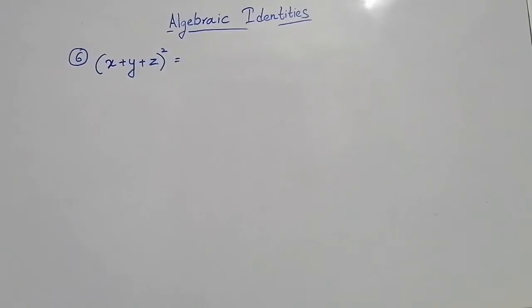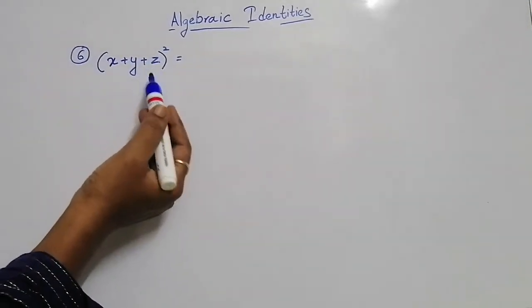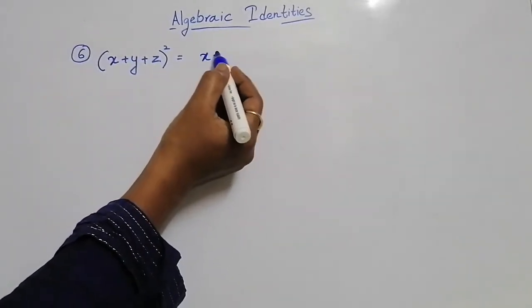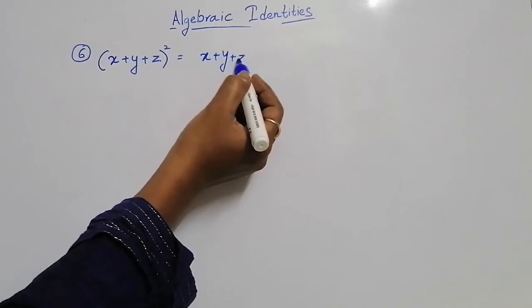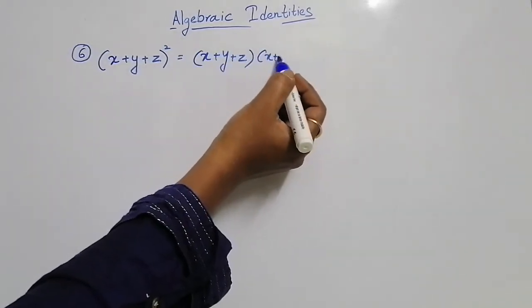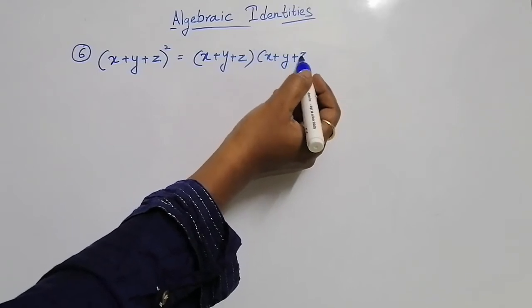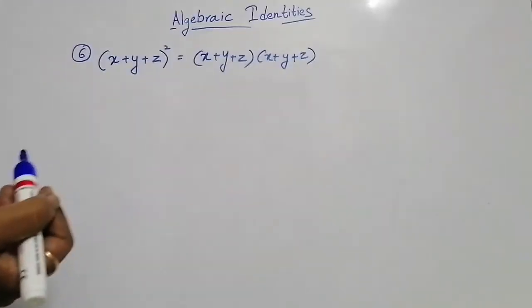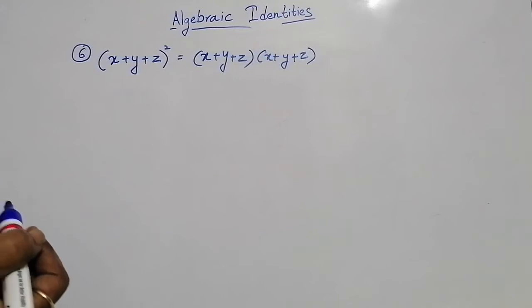Okay students, x plus y plus z whole square means x plus y plus z into x plus y plus z. x plus y plus z is multiplied two times.